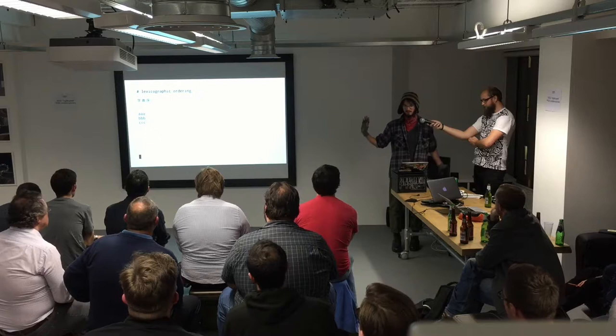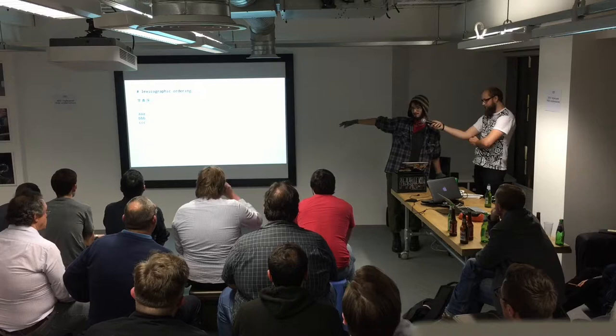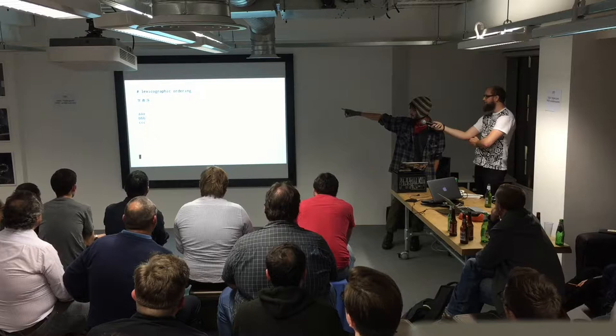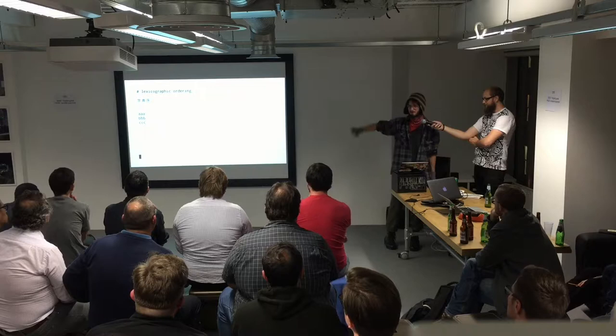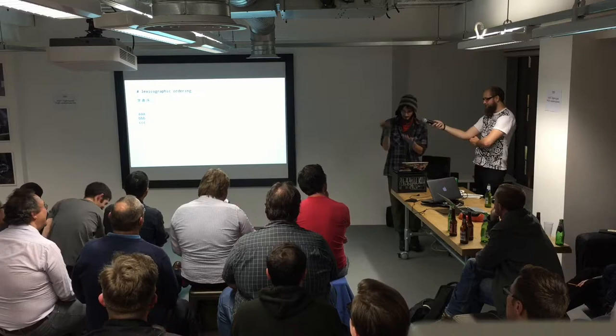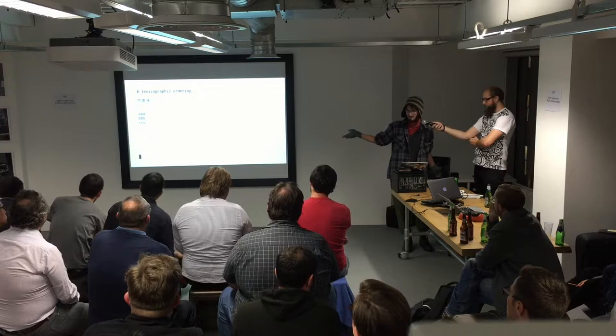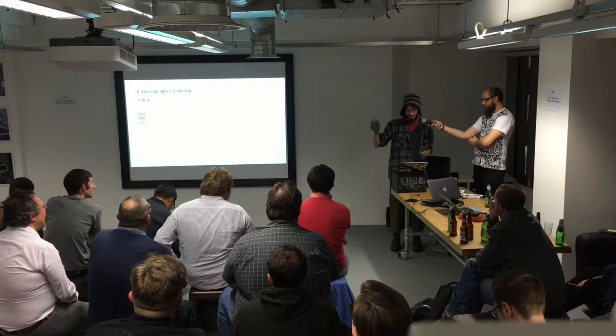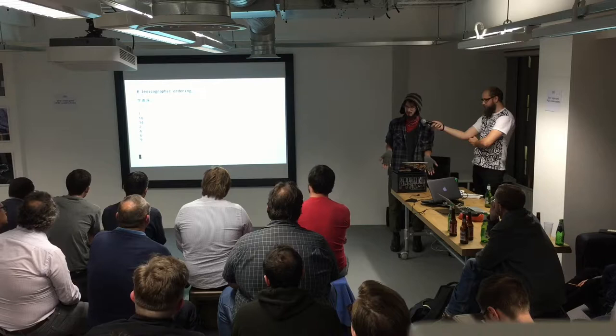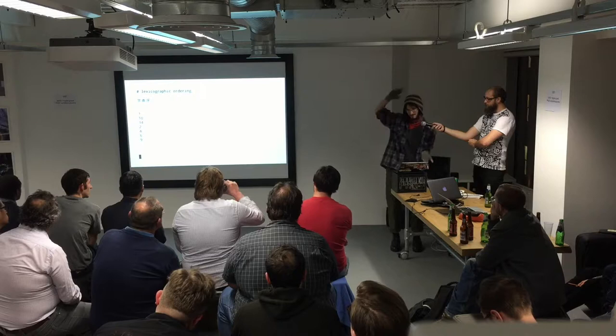In traditional Chinese, they have this really compact representation for the word 'lexicographic ordering' — just three Unicode characters. Things appear in string order: AAA comes before BBB comes before CCC. This can get a little unintuitive when you start dealing with numbers, because 1 comes first, but then 10 comes next instead of 2 or 4.